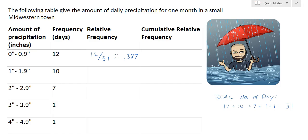So then if we had 10 days between 1 and 1.9 inches of rain, the relative frequency would be 10 out of 31 or 0.323. And then for the 2 to 2.9 inch category we had 7 days, so the relative frequency would be 7 divided by 31, which is approximately 0.226.